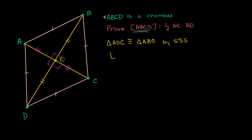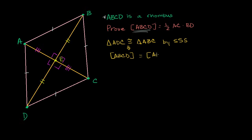Because of that congruence, we know that the area of ABCD is just going to be equal to two times the area of ABC. The area of ABCD equals the area of ADC plus the area of ABC, but since they're congruent, those two are going to be the same thing, so it's just two times the area of ABC.